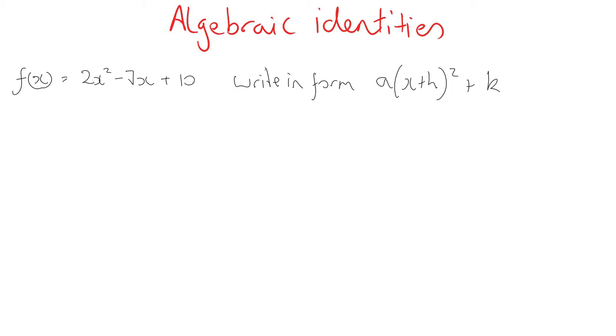In this video I'm going to look at algebraic identities, also known as unknown coefficients, and I'm going to look at it through a past paper question which came up in 2017. It's one I went through when I went through completing the square.